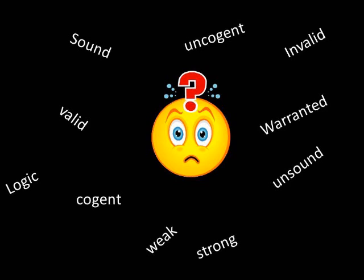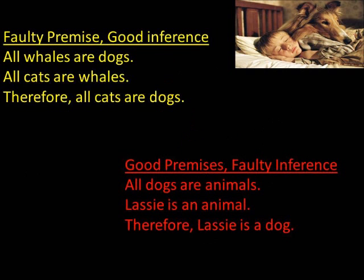You have valid, invalid, sound, unsound, and so on, but all of this reduces to a simple distinction. First we'll practice the distinction and then I'll explain what all these words mean. The first thing to remember is that there are two ways that arguments go bad: first, the premises may be false, and second, you may have a faulty inference.